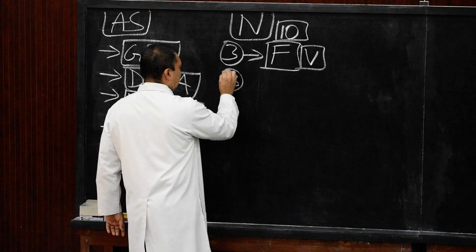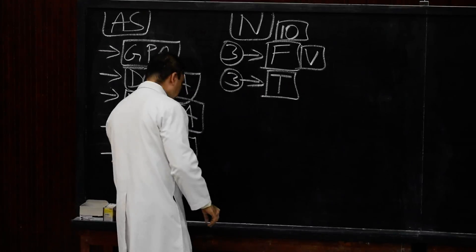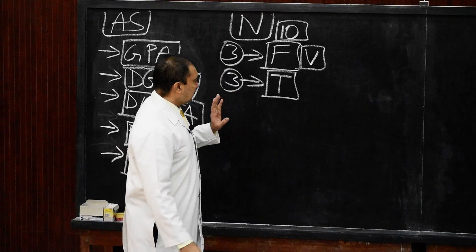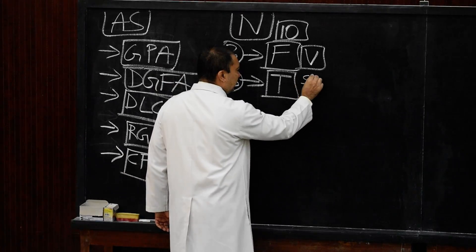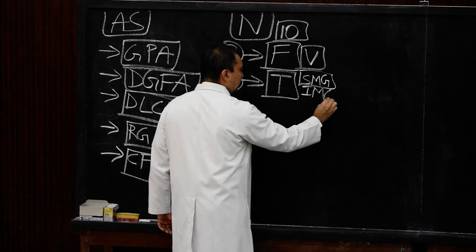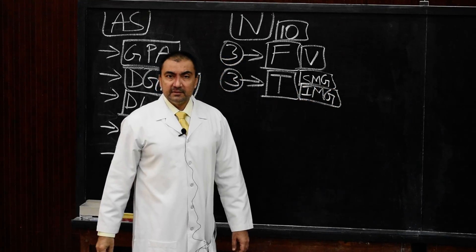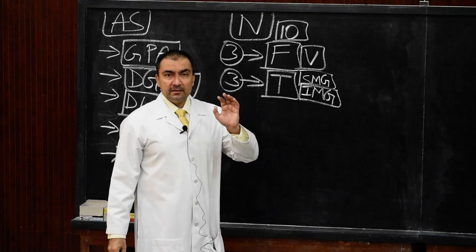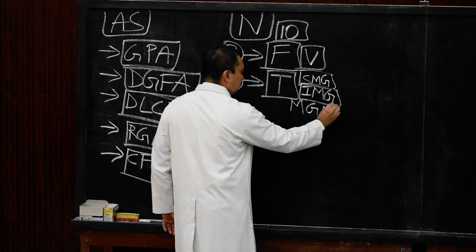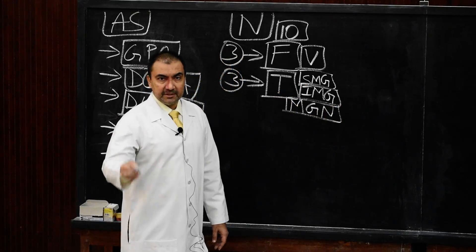Another three branches will be from tibial nerve. The names of these three branches are: the superior medial genicular, the inferior medial genicular, and the middle genicular nerve — these three are branches of tibial nerve.